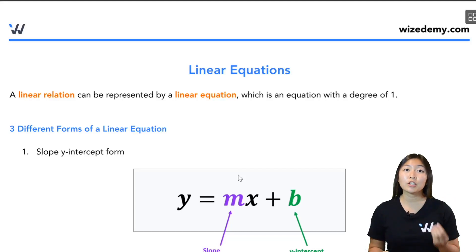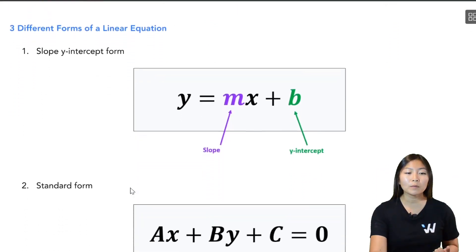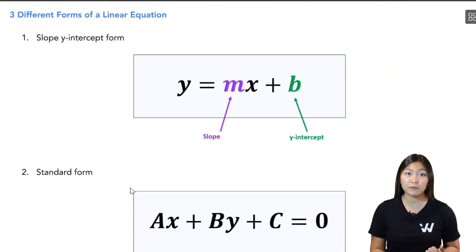So when you have a linear relation, that can be represented by a linear equation. Remember, these are just equations that have degree of 1, meaning that the independent variable, usually called x, has an exponent of 1. So there are three different forms of linear equations that you have to be familiar with.